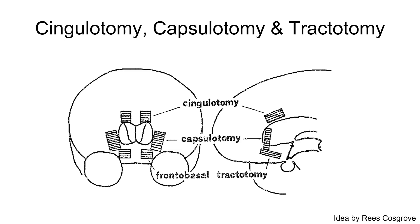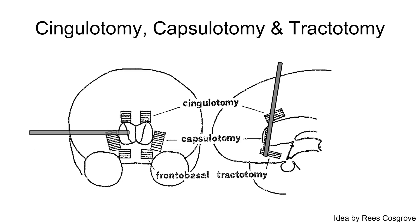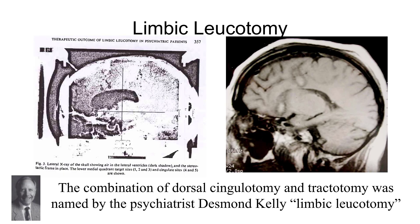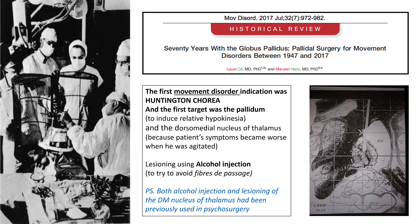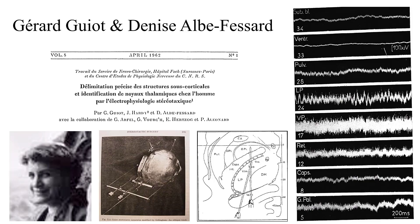The first thing we can conclude is that there is nothing new with multiple targets in stereotactic neurosurgery. On the contrary, stereotactic neurosurgery was building on the experience from large open procedures, and it must from the beginning have been natural to contemplate making the small stereotactic lesions in more than one aspect of the larger structures targeted in the open interventions. We can see this in psychosurgery, and perhaps most clearly in the limbic leucotomy, combining the dorsal cingulotomy and tractotomy, but also in movement disorders, where the very first procedure was a combination of two lesions — one in the dorsal medial nucleus of the thalamus, and one in the pallidum.